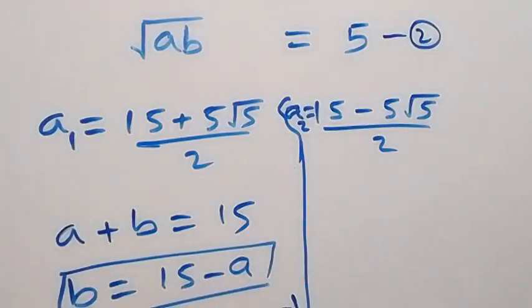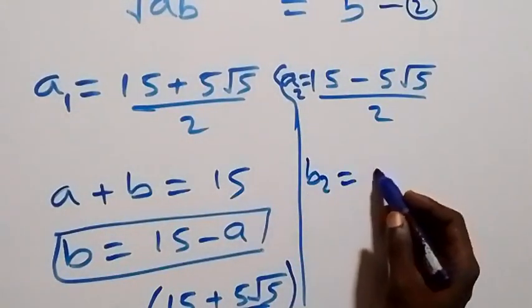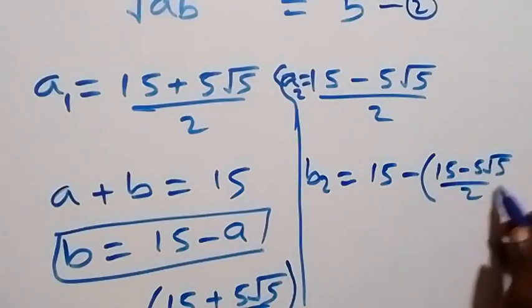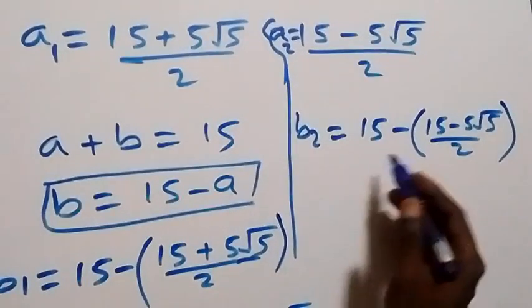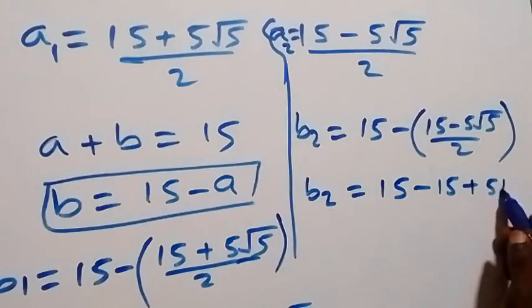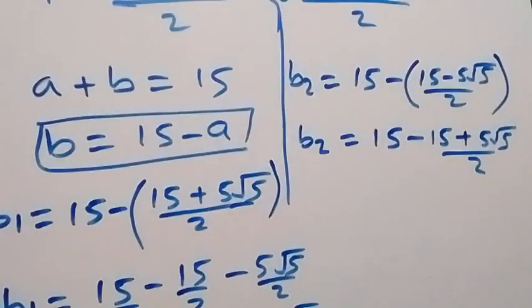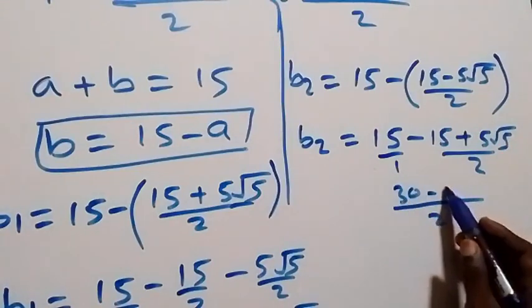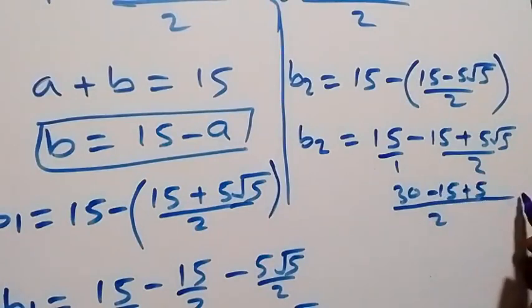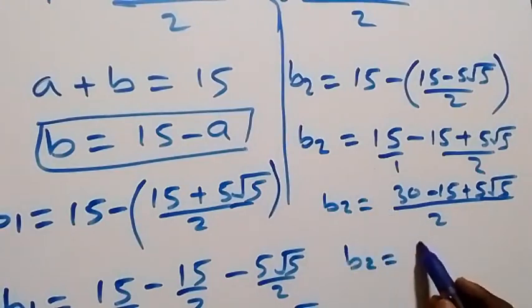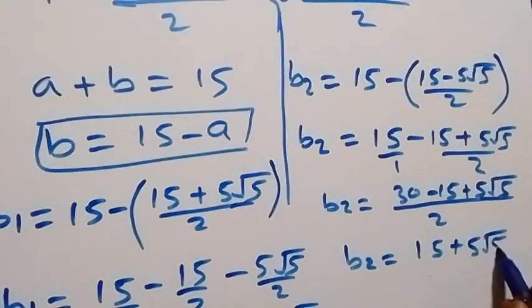We can get the corresponding value b2 using the same relation. b2 equals fifteen minus a2, which is fifteen minus the bracket fifteen minus five root five over two. Bringing together with LCM of two: thirty minus fifteen plus five root five over two. So b2 equals fifteen plus five root five over two.